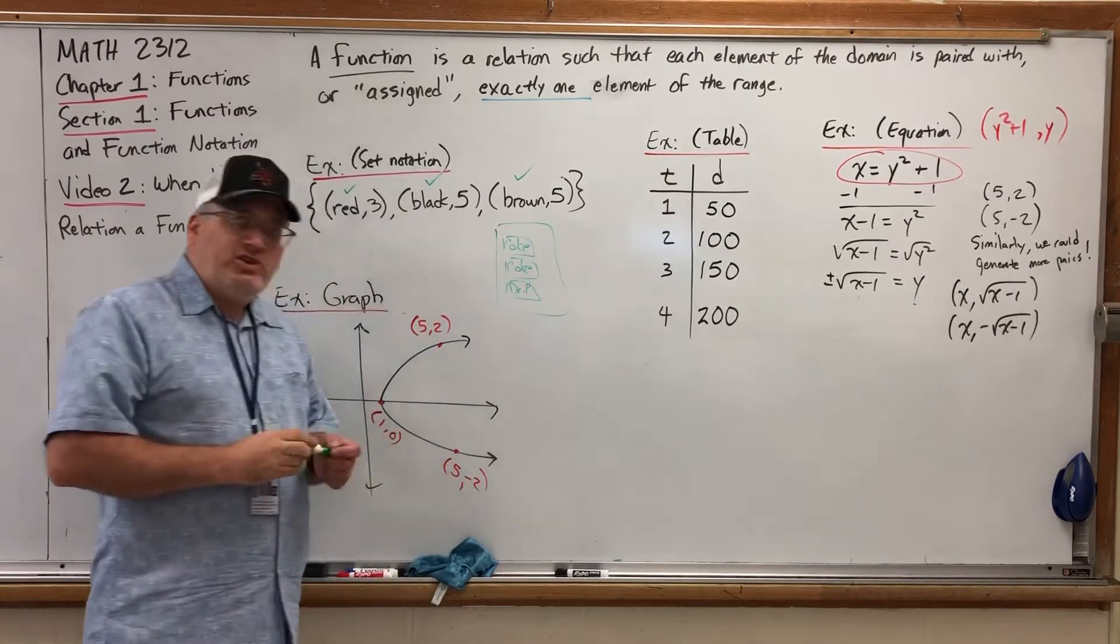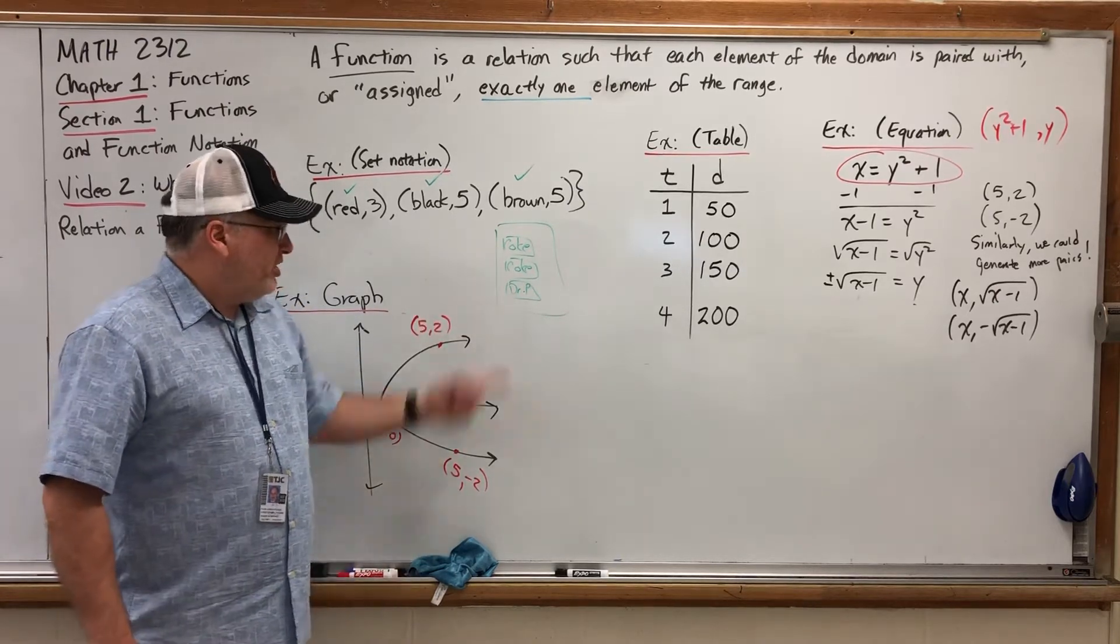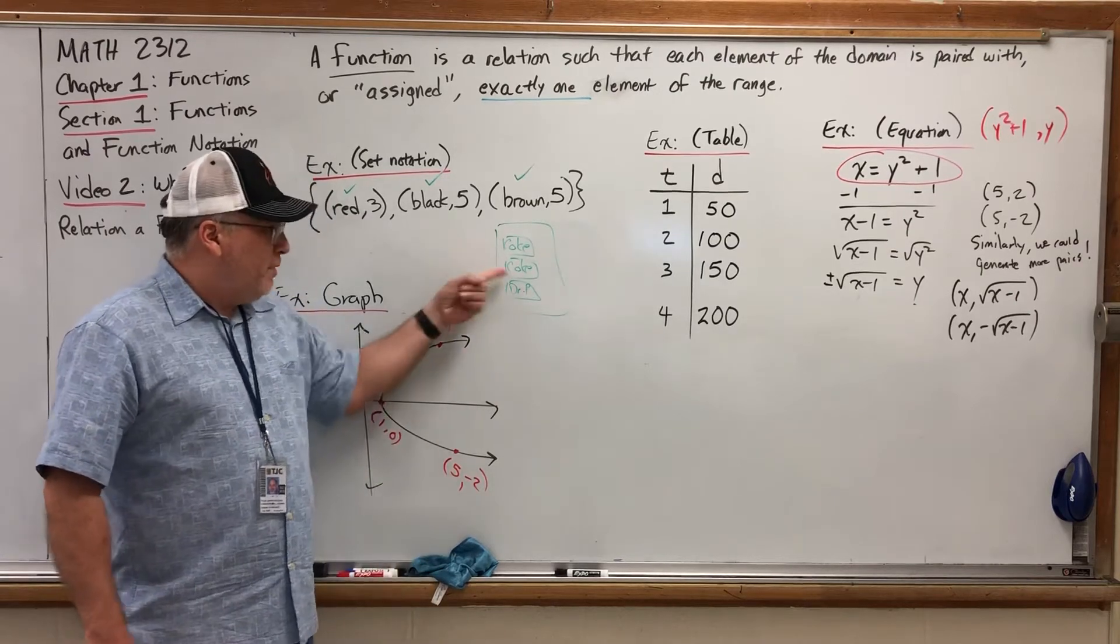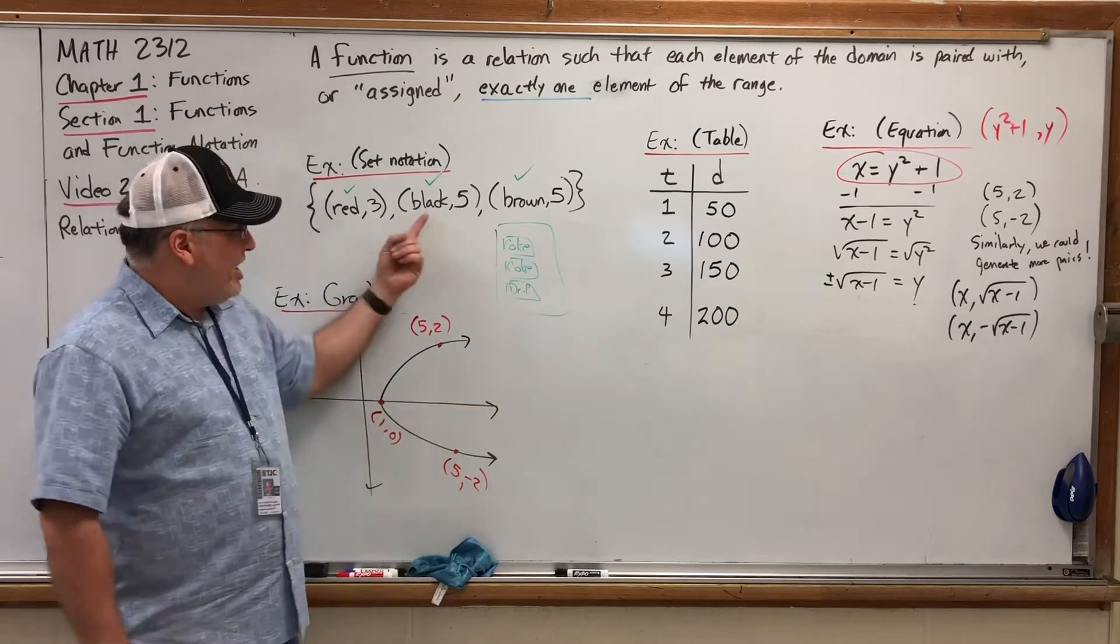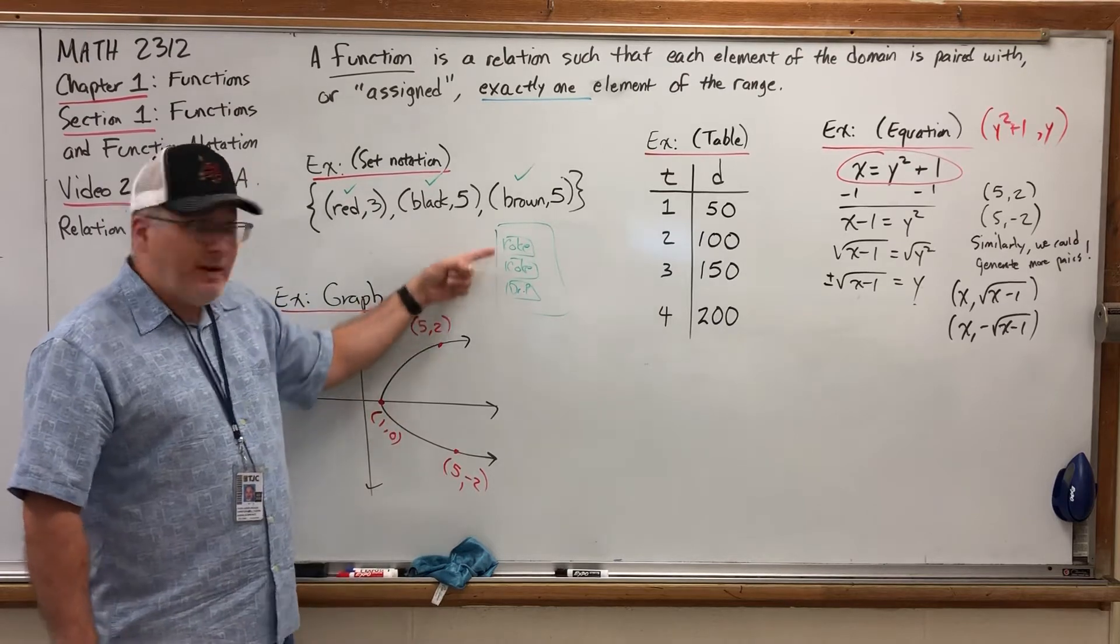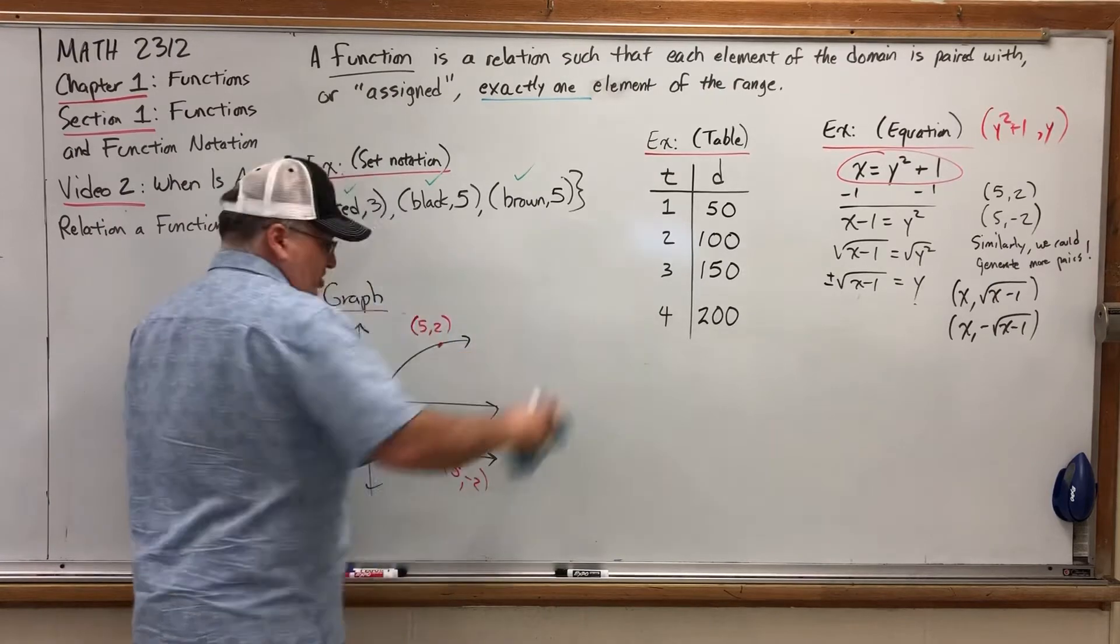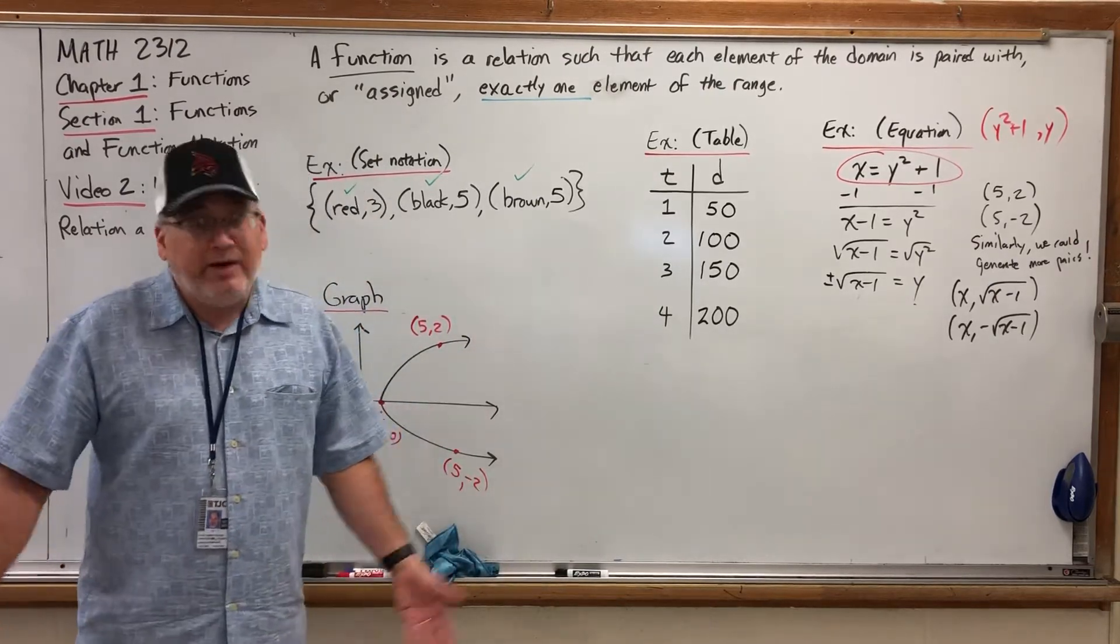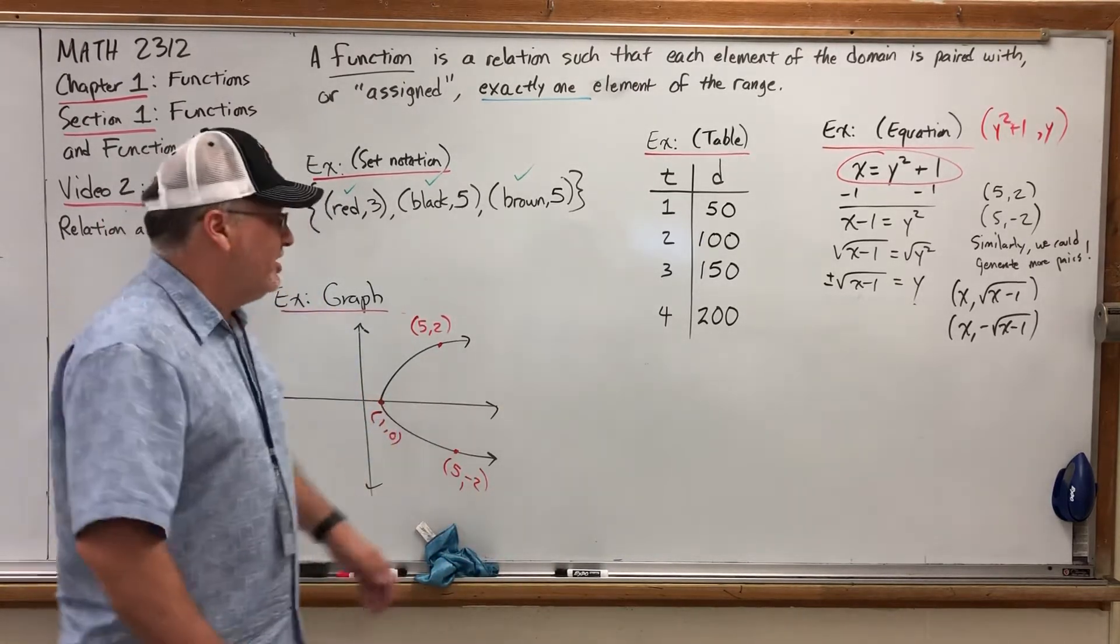If the machine is functioning properly, then pressing this one button will produce a Coke, but pressing this second button will also produce a Coke. As long as each button produces one output, then it's functioning properly. As long as each X is paired up with a single output, then it's functioning properly. Some of those outputs might be the same, but that's okay. We can't say, press the Coke button one time we get a Coke and press it the next time we get a Dr. Pepper. Now it's not functioning properly.